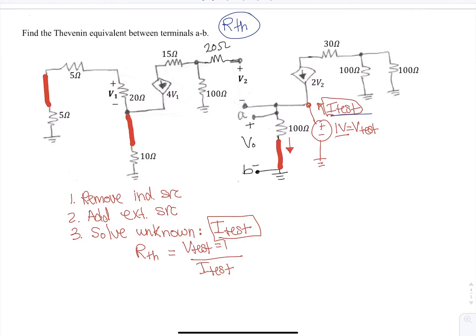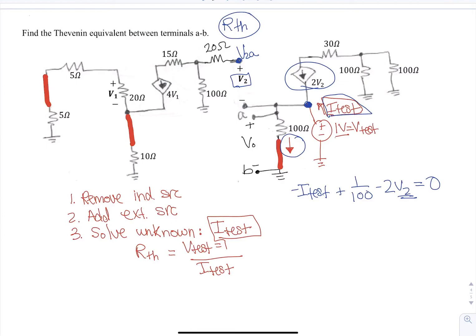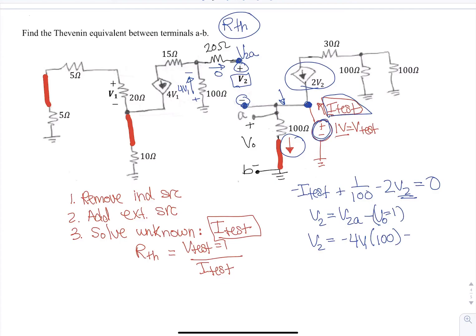To solve for I_test, we write a current summation at that node — there are three branches. I_test plus one over 100 will be this current, and then we have the dependent current source of 2V2. V2 is again a differential: V2 equals V2A minus V naught, and in this case V naught is set to one volt. The current is zero in the dangling branch, and we have 4V1 going through the 100-ohm resistor, so that is 4V1 times 100, the current times voltage, minus one.